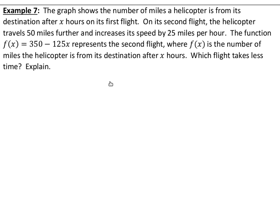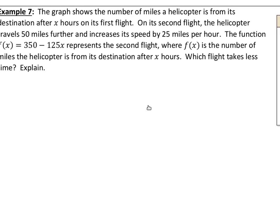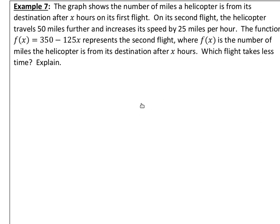And our final example, the graph that's over here on the right, I'll go over to that in just a second, shows the number of miles a helicopter is from its destination after x hours on its first flight. So the graph is the first flight. On its second flight, the helicopter travels 50 miles further and increases its speed by 25 miles per hour. The function f of x represents this second flight, where f of x is the number of miles the helicopter is from its destination after x hours. So, we've got the same inputs and outputs. One of these trips is graphed, the other one's given as a function. So, I'm just going to write that function over here so I can slide the screen over. 350 minus 125x. And I'm just going to put second for the second flight.